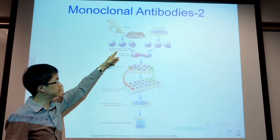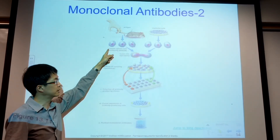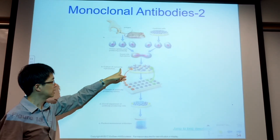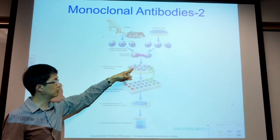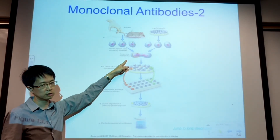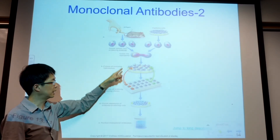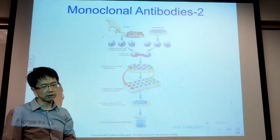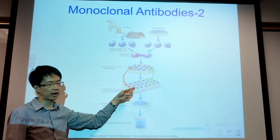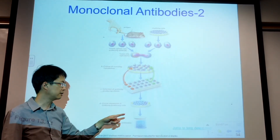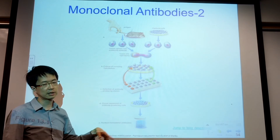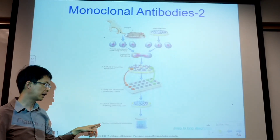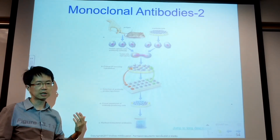You then take cells from the spleen that are making the antibody and fuse them with myeloma cells — the cancerous plasma cells. After fusion, you culture these cells so they continue to grow and produce antibodies. Not all cells are successful; some die, some survive but don't produce antibodies. Only a few will survive and produce antibodies. Those cells are harvested, cloned, and allowed to grow so they all make the same antibody. Finally, the antibody is purified and can be sold by drug companies.